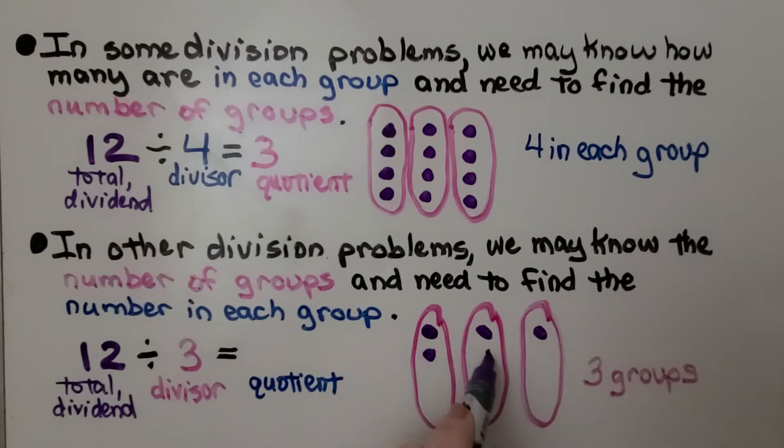That's 3, 4, 5, 6, 7, 8, 9, 10, 11, 12. We have three groups, and we see there's four in each group. Our quotient is four.